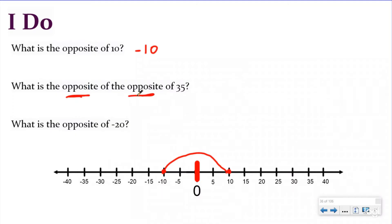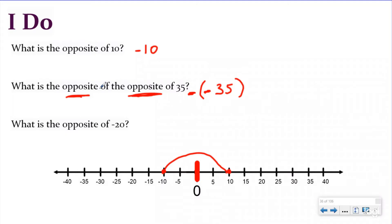What is the opposite of the opposite of 35? Here I have 35. If I want to turn it into the opposite of 35, I put a negative sign right there — so now I have the opposite of 35. Now I want the opposite of that, so I'm going to put this in parentheses and put another negative sign because I wanted the opposite of the opposite of 35. I know the opposite is going to be the negative sign, so I need two of them because I had two opposites — two negative signs. If I have negative 35 and I want the opposite of that, that would be positive 35. So the opposite of an opposite is a positive, or two negatives are going to make a positive.